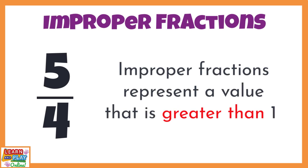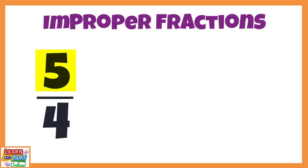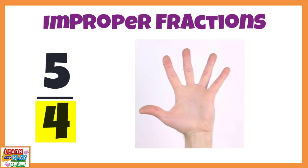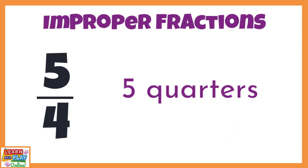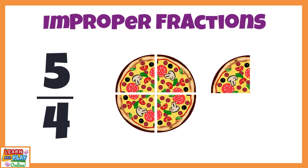Let's apply this to our pizza scenario so you can visualise it to have a better understanding. Let's break this improper fraction down. The numerator, 5, means that you ate 5 slices of pizza. The denominator, 4, means that the pizzas were cut into quarters. This means that you ate 5 quarters. From this representation, you can clearly see that the improper fraction 5 quarters has a value that is greater than 1 because you ate more than 1 whole pizza.